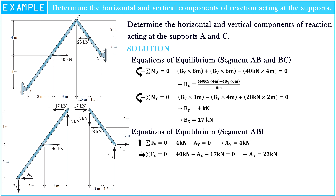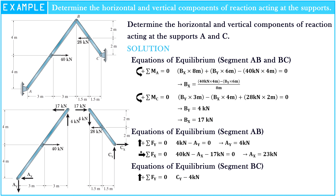After segment AB is solved, let's go into segment BC. Let's apply directly by writing the equilibrium equations about segment BC. The sigma of forces on the y-axis is equal to zero, so CY minus 4 kN is equal to zero; hence CY is equal to 4 kN. The sigma of forces on the x-axis is equal to zero, so CX plus 17 kN minus 28 kN is equal to zero.